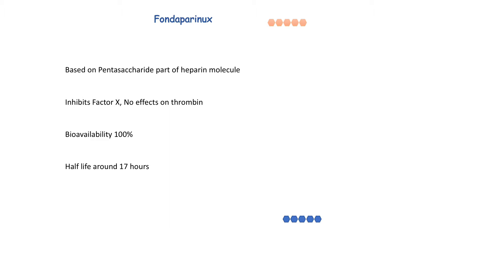After subcutaneous injection, bioavailability of fondaparinux is 100%. It is not protein bound in blood, and the only protein it binds to is antithrombin 3. For this reason, its half-life is around 17 hours, so it can be given once daily. Fondaparinux is mainly excreted by the kidneys, so its dose needs to be adjusted in the presence of renal failure.